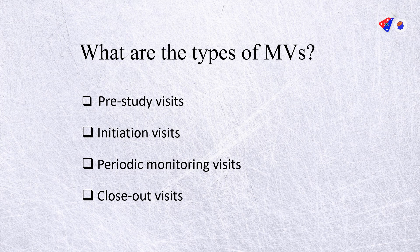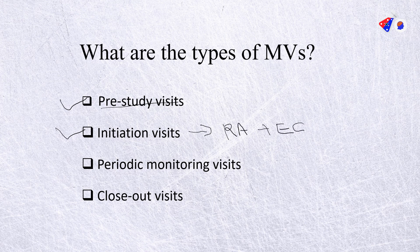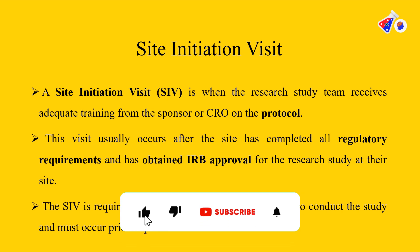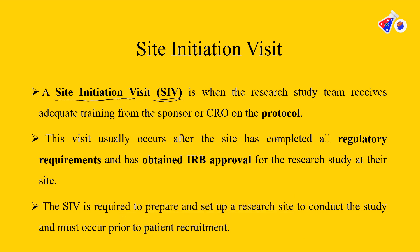As we saw in the last lecture, we covered the pre-study visit and the activities done during that visit. In this lecture we are going to see the initiation visit. Before the initiation visit, it is very important that you have prior regulatory approval plus ethics committee approval. Only once you have both approvals can you initiate a particular site. The initiation visit is also commonly called the site initiation visit, or SIV.